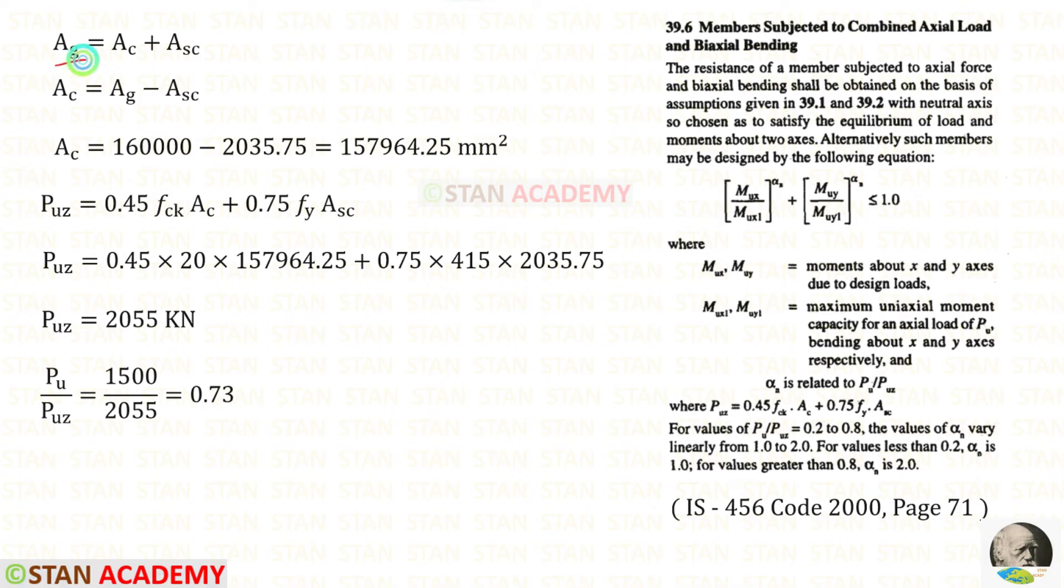We know that the gross area will be equal to the area of the concrete plus the area of the steel. So the area of the concrete will be AG minus ASC. We know both of the values. Let us apply them. So for AC, we will get these.